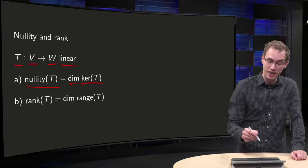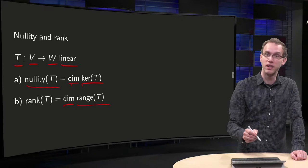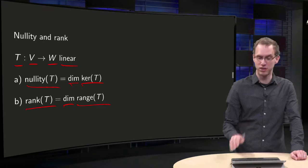And similarly for the range of T, it is also a subspace, so there is a basis and the dimension. The dimension of the range of T is called the rank of the transformation T.